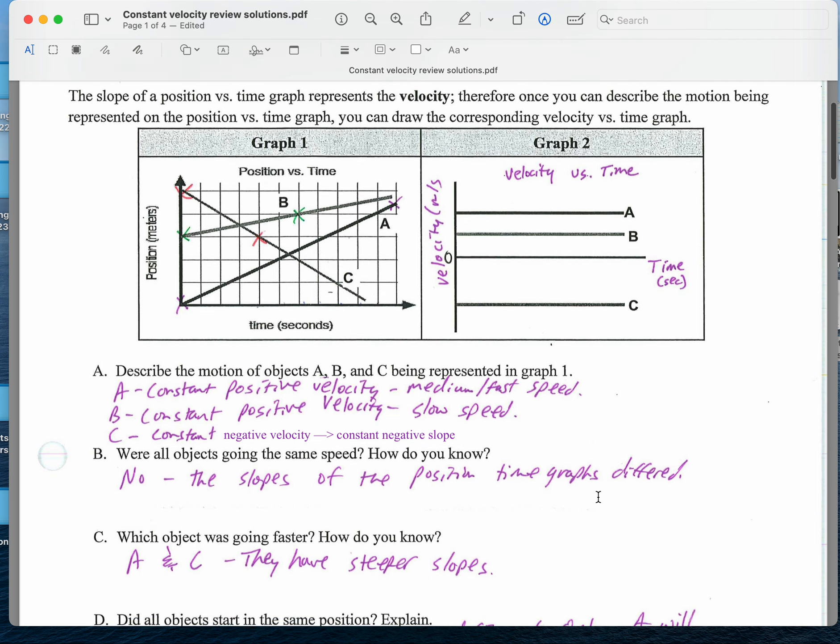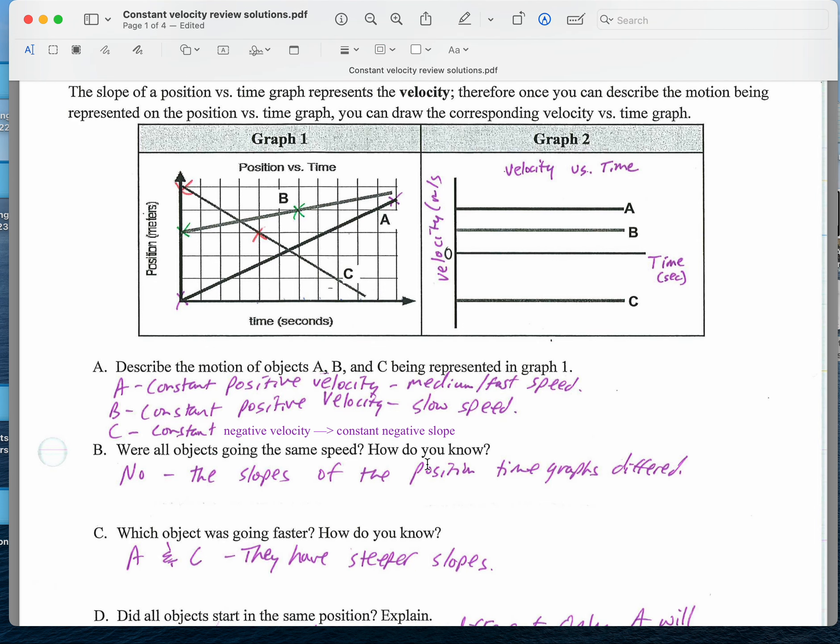I don't know why I didn't finish that up when I hand-wrote those answers. At any rate, were the objects ever going the same speed? Nope. The slopes of the position time graphs were all different. Which object was going faster? I would say A and C were going faster. They have steeper slopes.